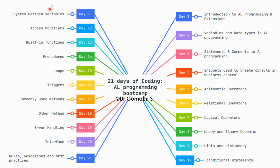Day nine is lists and dictionaries, day ten is conditional statements — these are the very basics. Once we complete these ten days, we move on to system-defined variables and user-defined variables on day eleven, access modifiers on day twelve, built-in functions and procedures on day fourteen, loops on day fifteen, triggers on day sixteen, commonly used methods on day seventeen, other methods on day eighteen, error handling on day nineteen, interface, and finally rules, guidelines, and best practices for AL programming.